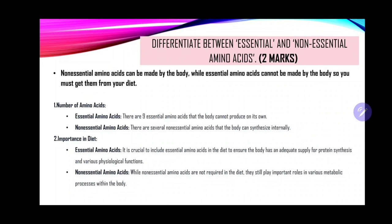This question is worth two marks, so you must have two points to get one mark each per response. Non-essential amino acids can be made by the body, while essential amino acids cannot be made by the body, so you must get them from your diet. Additional information may include the number of amino acids — there are nine essential amino acids that cannot be produced by the body, which is why they are called essential. Non-essential amino acids are several and can be synthesized by our bodies.